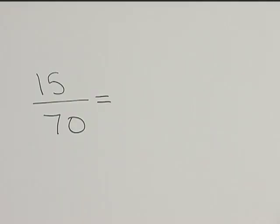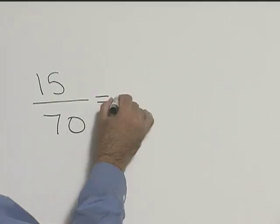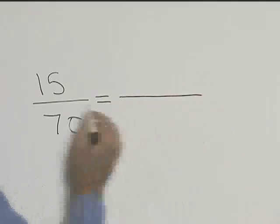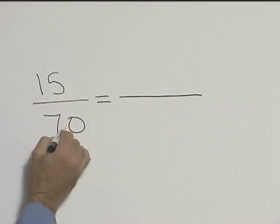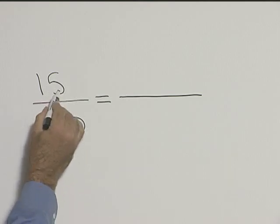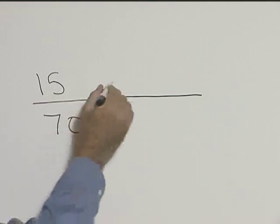Let's reduce the fraction 15 divided by 70. What number will go into 15 and 70? Looking at the last digits, 5 is a number.